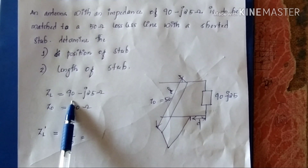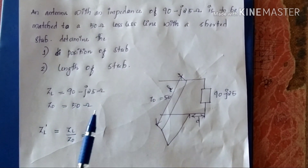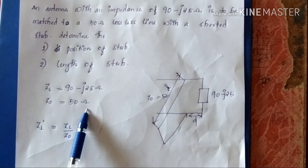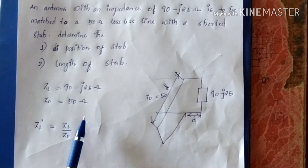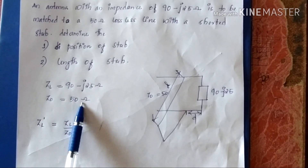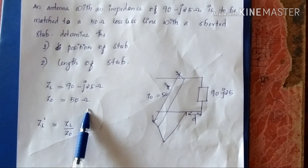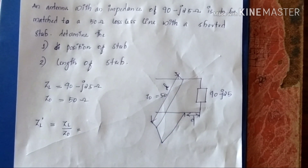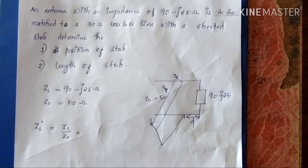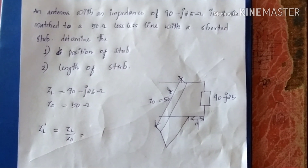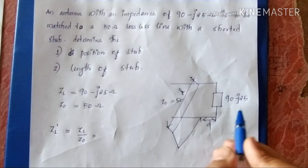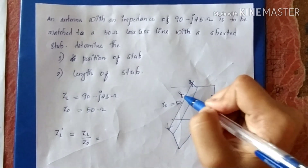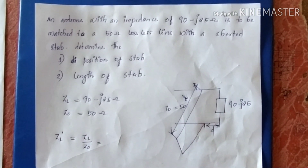The load impedance is equal to 90 minus j25 ohm. The characteristic impedance Z0 is equal to 50 ohm. In this case, we are going to find the position of the stub and the length, where d is the distance from the load to the stub.